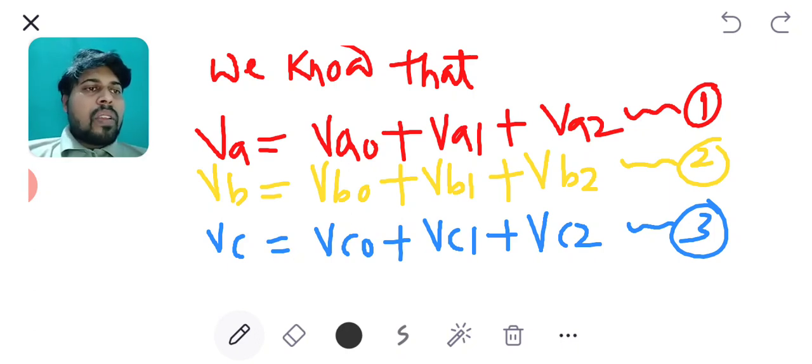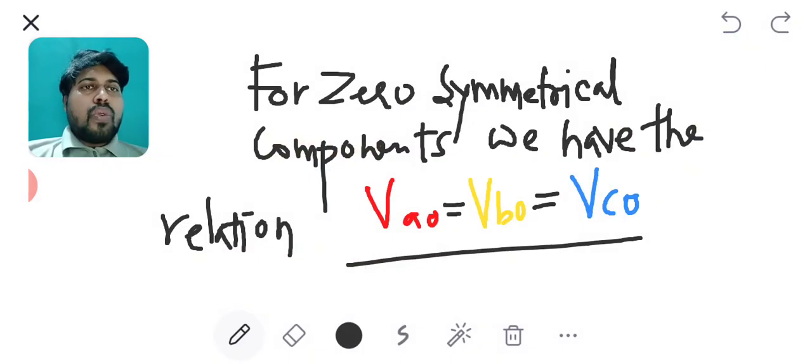To find that we must know that in zero symmetrical components we have the relation as Va0 equals Vb0 equals Vc0. It means that wherever Vb0 and Vc0 will appear I can substitute it as Va0.